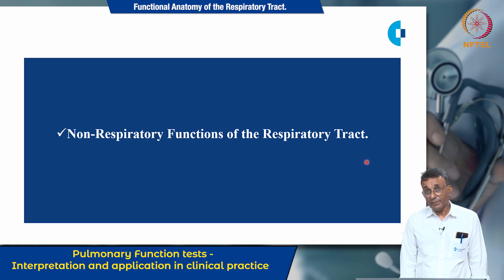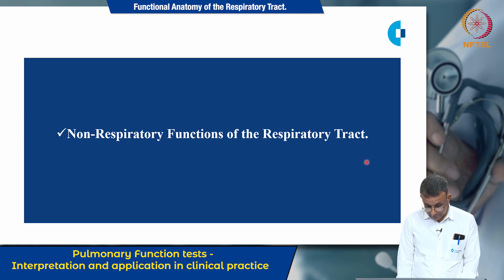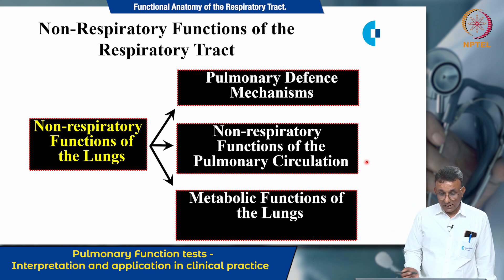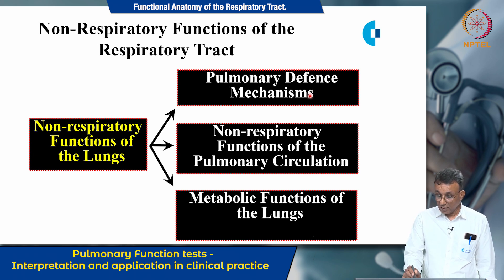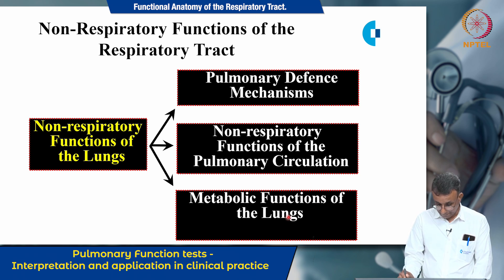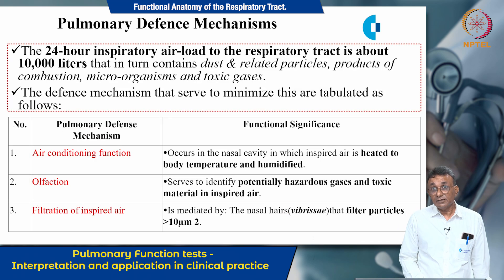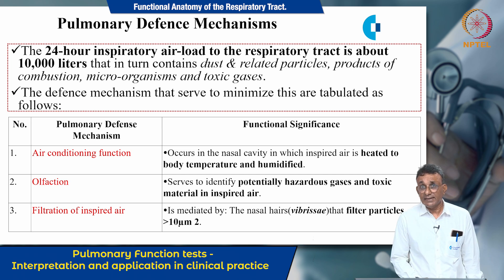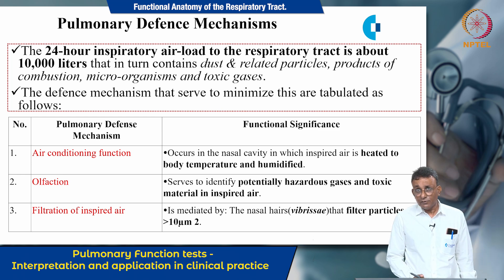Having given an overview of the primary functions of the lung, let us look at some of the non-respiratory functions of the respiratory tract. These can be grouped into three categories: pulmonary defense mechanisms, non-respiratory functions of the pulmonary circulation, and the metabolic functions of the lungs. The 24-hour inspiratory air load to the respiratory tract is about 10,000 liters, containing dust and related particles, products of combustion, microorganisms, and toxic gases which are detrimental to the respiratory tract.